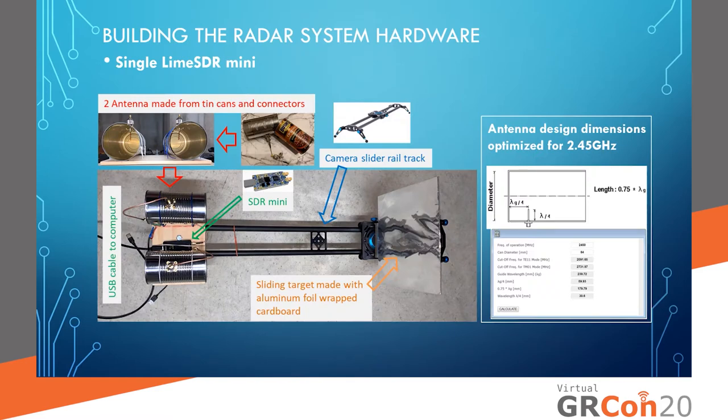This is the design for my single SDR system. We have two tin cans as antennas — one transmit and one receive — both connected to a single SDR unit. We also have the camera slider rail and the target. The antennas are optimized for the 2.4 to 2.5 gigahertz range.